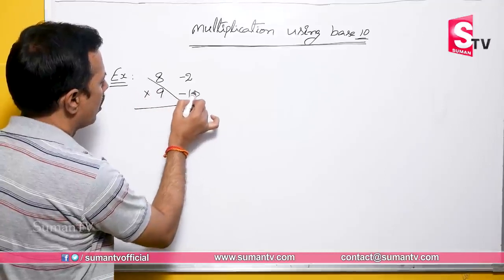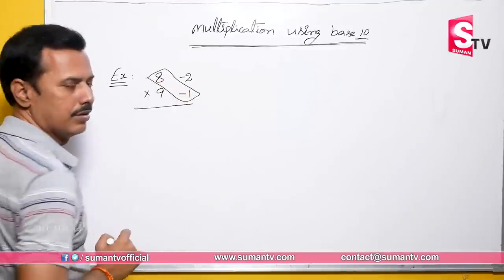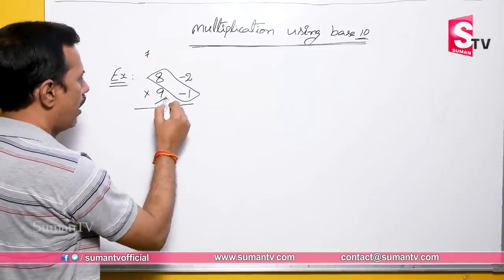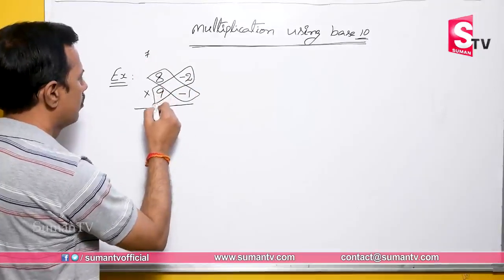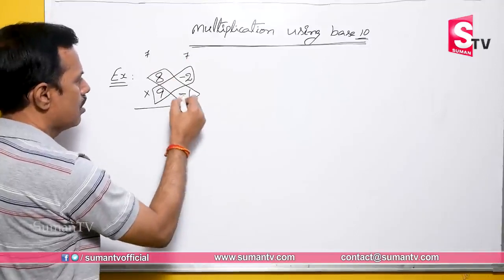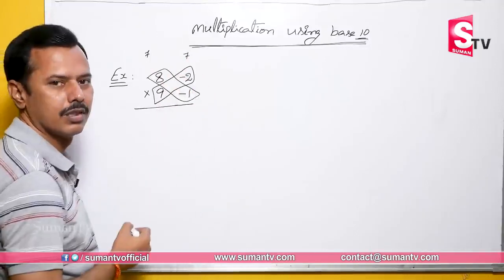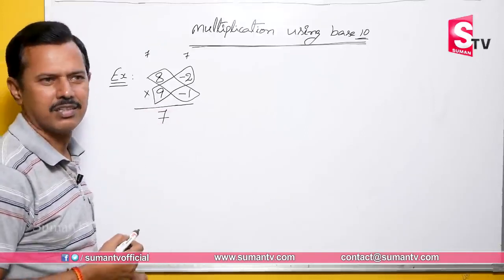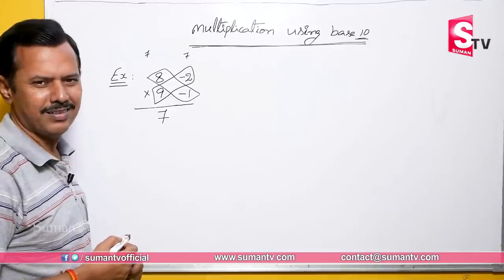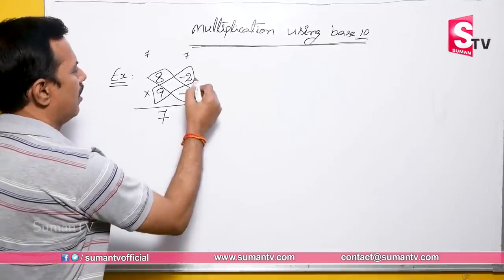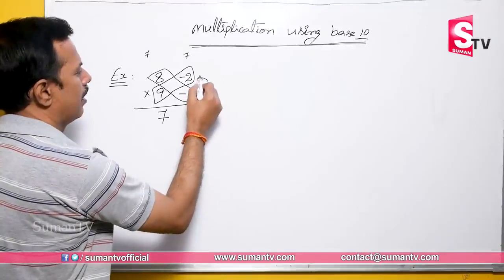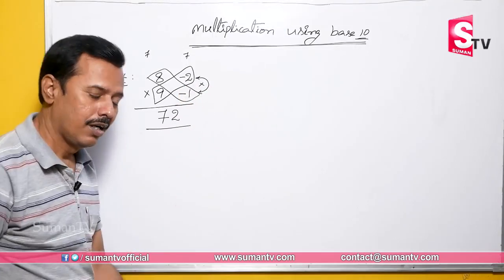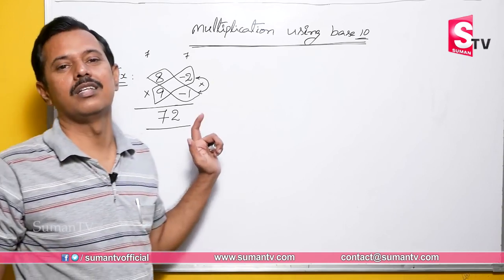8 minus 1 — that's 7. Or 9 minus 2 — that's also 7. That is your left part of the answer. For the right part, same as last time: 2 times 1 gives us 2. So 8 times 9 equals 72. You don't need the 8th or 9th table.